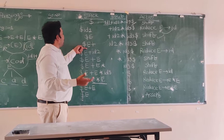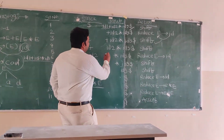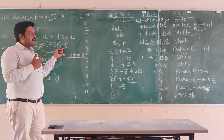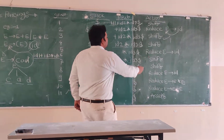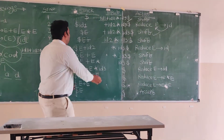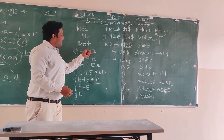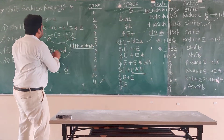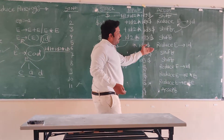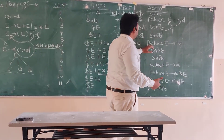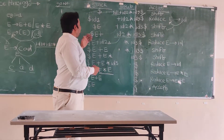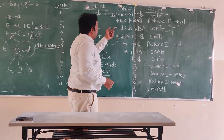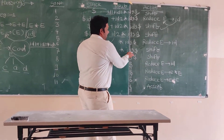In the input buffer there is id2 star id3. There is no reduction available for the plus symbol in the grammar, so we go for the next shift. We shift id2 into the stack. The stack becomes dollar E plus id2. Now we know that id2 is also reduced to E in the grammar, so we apply reduce: id to E. The stack becomes dollar E plus E, and the input buffer contains star id3 dollar. The next function is shift, so star is shifted from the input buffer to the stack.